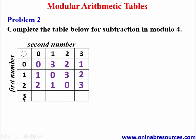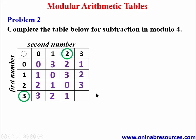In the last row, our first number is 3: 3 minus 0 gives 3, 3 minus 1 gives 2, 3 minus 2 gives 1, and 3 minus 3 gives 0. We record 0 and we have completed the table for Problem 2 in modulo 4.